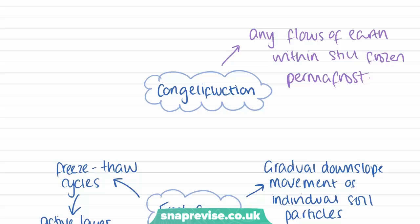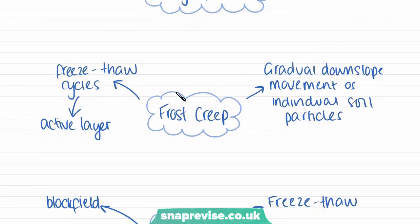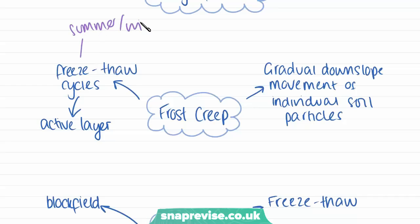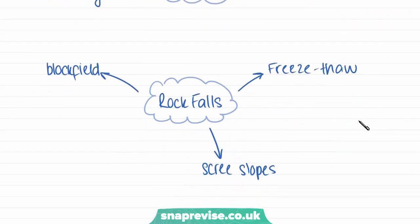Our third type of mass movement is frost creep, which is the gradual downslope movement of individual soil particles due to alternating freeze and thaw cycles. This occurs during summer and winter as the upper layers of the permafrost melt and then freeze again, and it only occurs in the active layer of the permafrost.